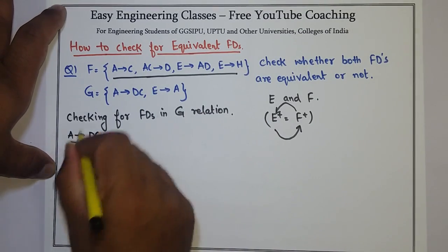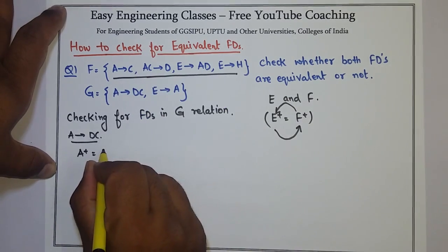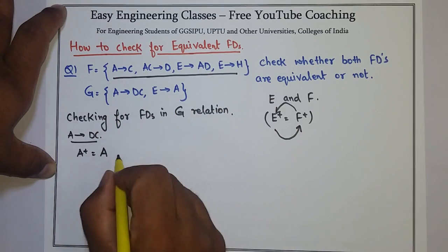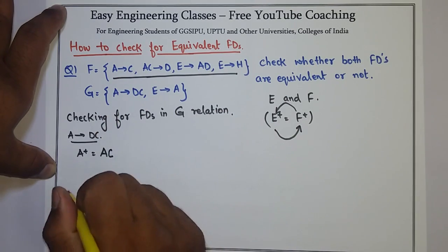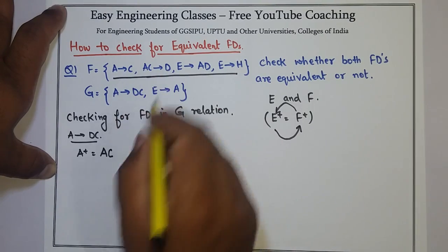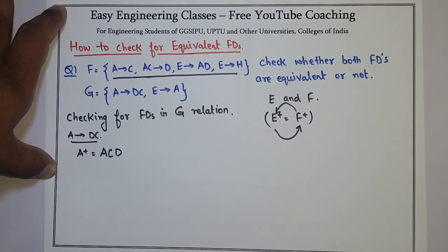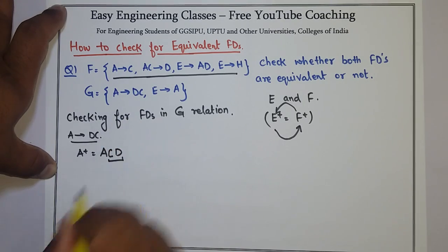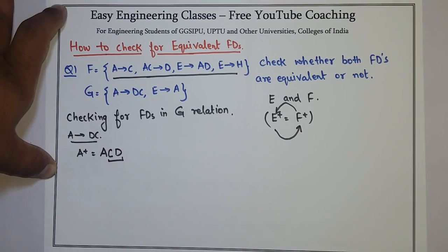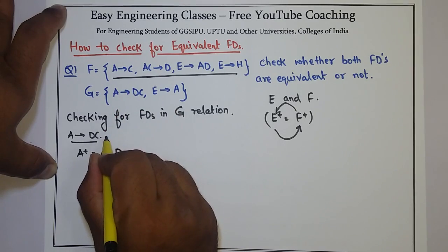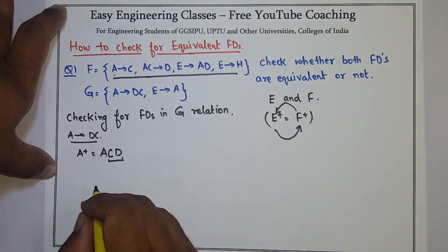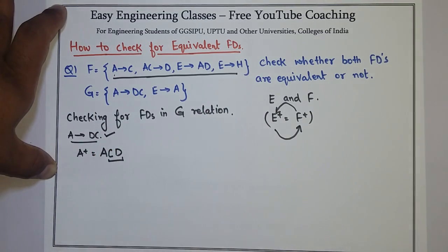So if we can infer this FD from the FDs given in F, in A's closure CD is present. That means this FD can be determined from the FDs given in relation F. So this is correct.